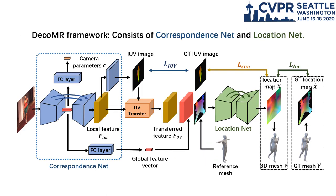Our framework consists of two components. The correspondence net aims to estimate an iUV image as well as extract global and local image features. The location net aims to regress a location map from the image features transferred to the UV space.